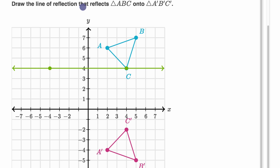We're asked to draw the line of reflection that reflects triangle ABC, that's this blue triangle, onto triangle A prime, B prime, C prime, which is this red triangle right over here. They give us a little line drawing tool in order to draw the line of reflection.